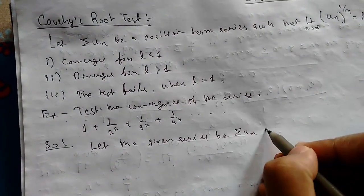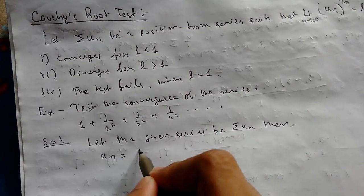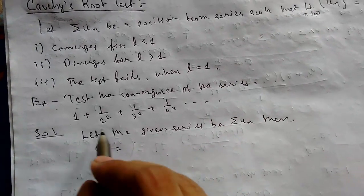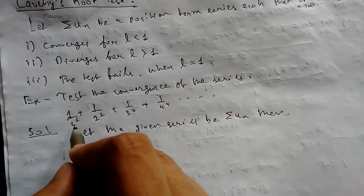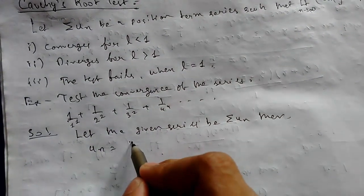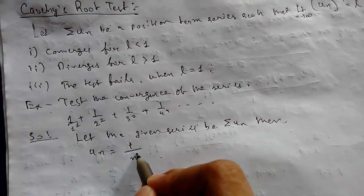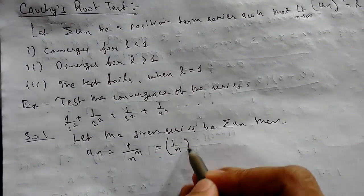Then u_n equals - now we have to see what will be the general value of u_n. We can modify this and write the general term as 1/n^n, which can also be written as (1/n)^n.